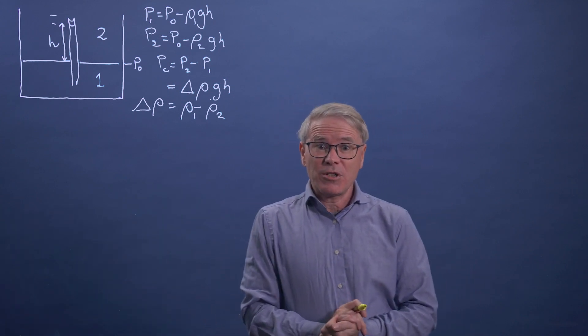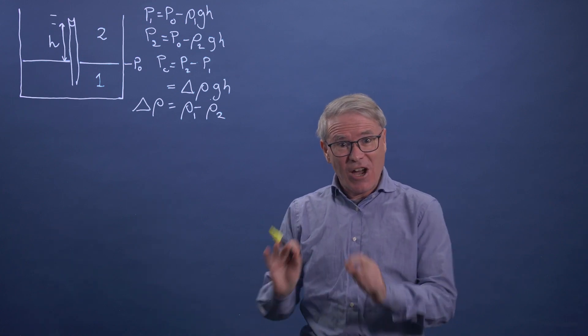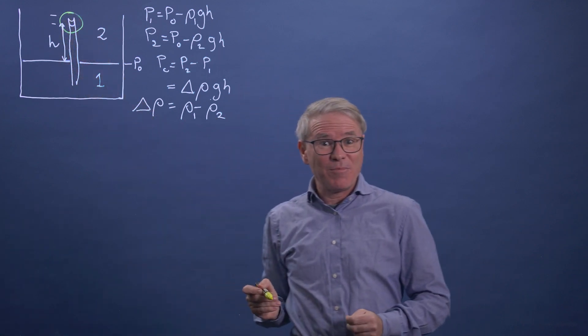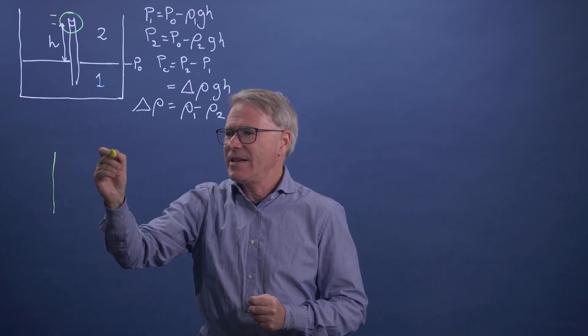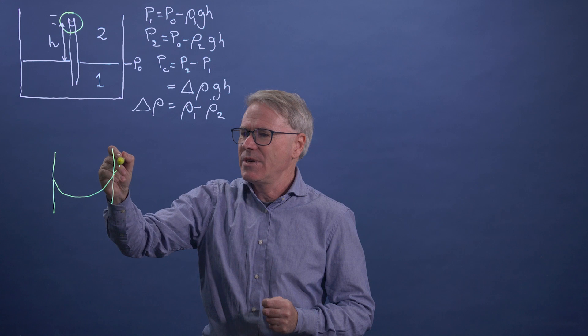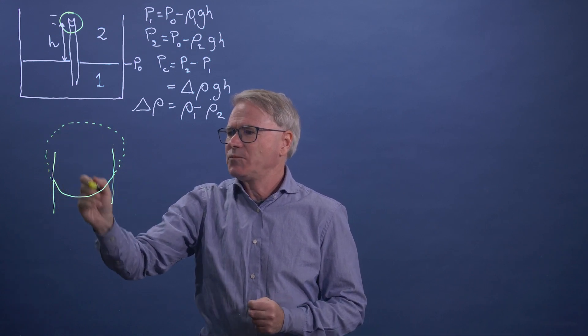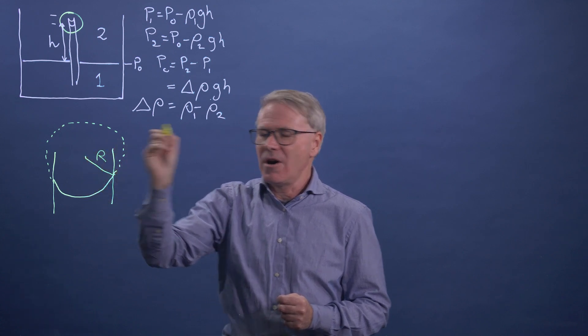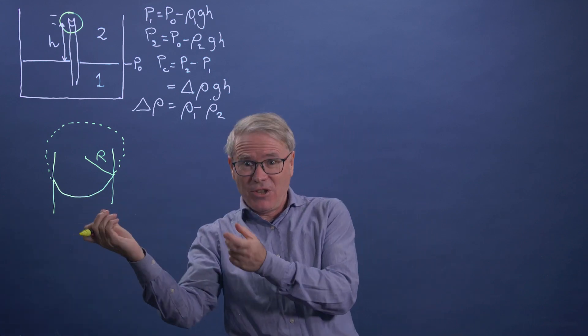So how do we find the capillary pressure? Idea one is to use the Young-Laplace equation. So what we do is we're going to blow up this picture and do a bit of geometry. So let's just look at that meniscus really carefully. It's like this, and it's part of a circle. So I'm terrible at drawing circles, but you can imagine there's a circle here. And this has a radius of curvature, which we're going to call R. And this is going to be a radius of curvature in two directions, because this is a circular tube.